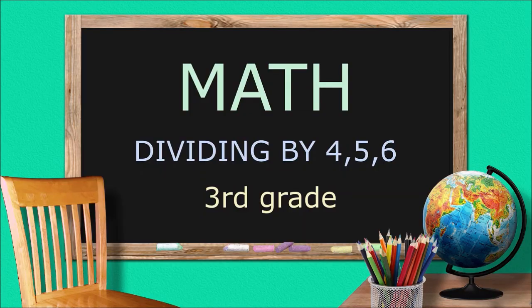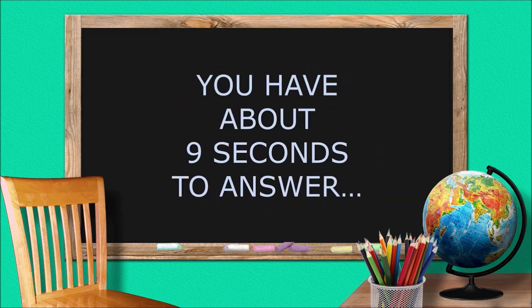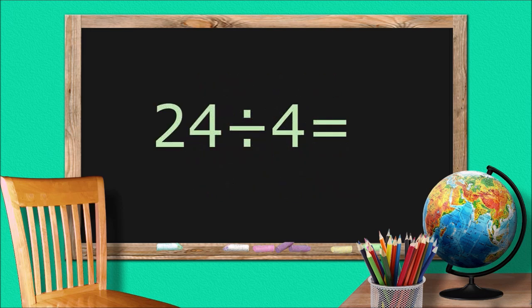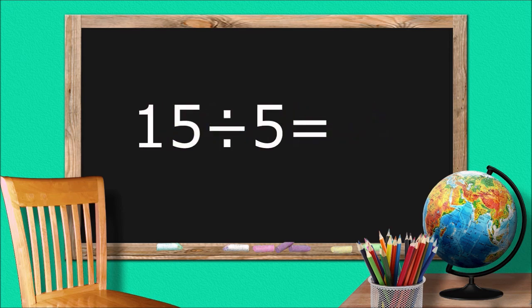Math: dividing by four, five, six — third grade. You have about nine seconds to answer. Twenty-four divided by four equals six. Fifteen divided by five equals three.